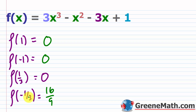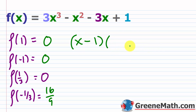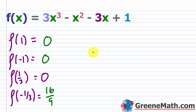Even with this simple example, you can see how tedious it is to find zeros this way. Once you have one zero, you can use it with synthetic division to factor the polynomial. The other factor would be a quadratic, and you could use the quadratic formula. We'll need other tools to make this method efficient — we'll cover those in future lessons.